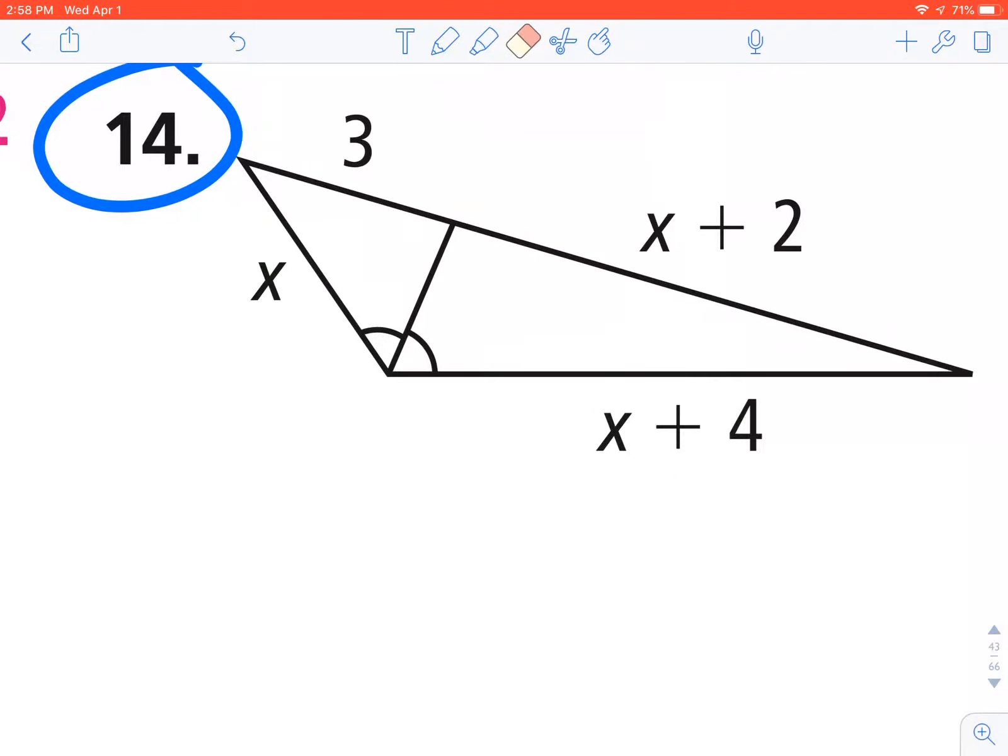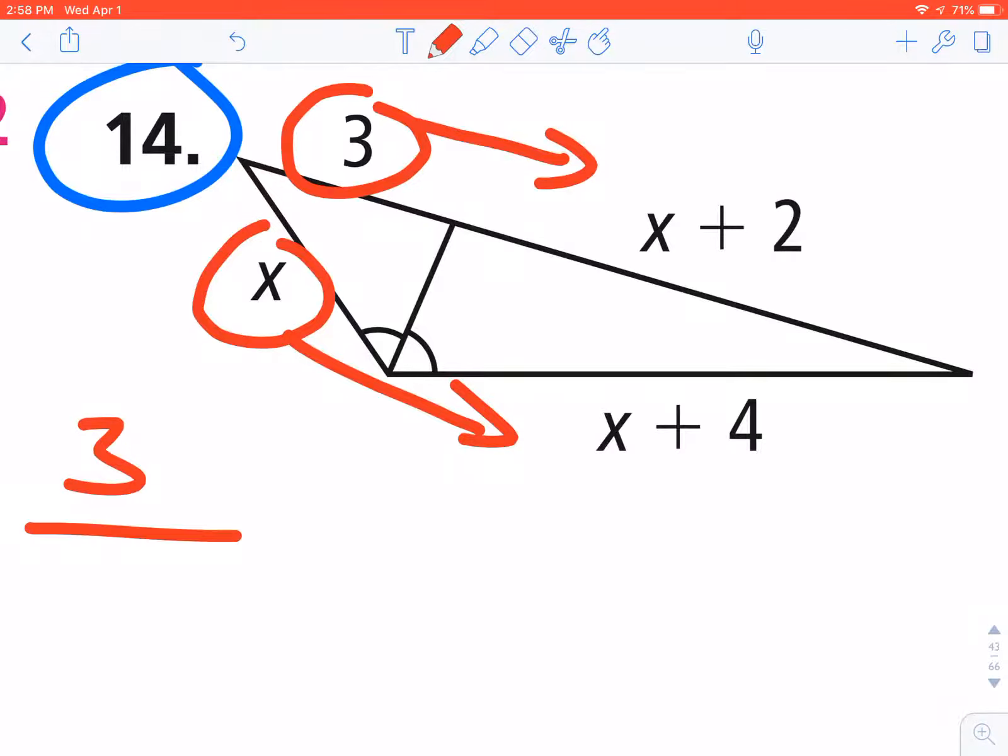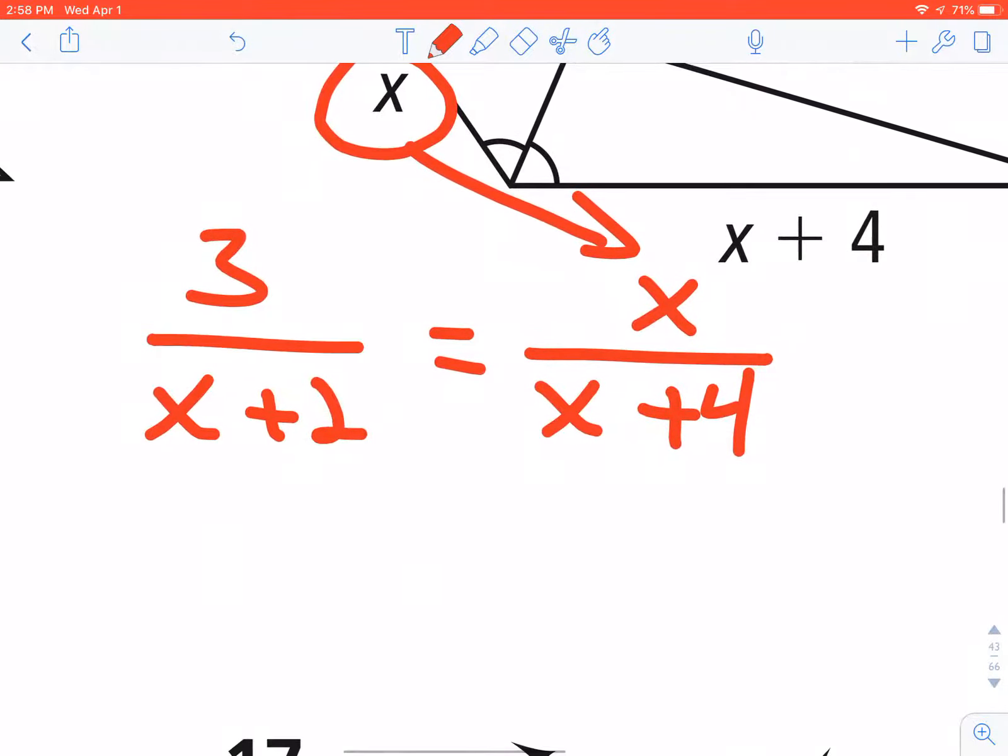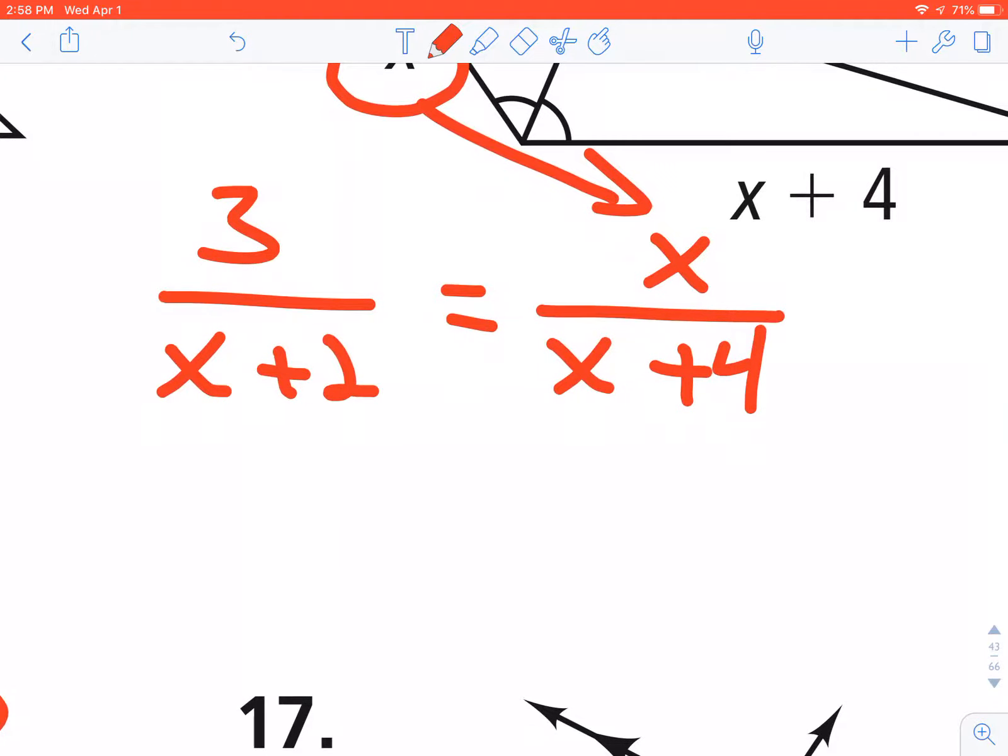Let's take a look at number 14. Again, to show you the different ways to set up, I'm going to compare different parts in this triangle. I'm going to compare kind of the top left here, work from left to right. So I'm going to compare 3 compares to x+2 as x compares to x+4. I'm going to go to another page so I have more room to do this work.